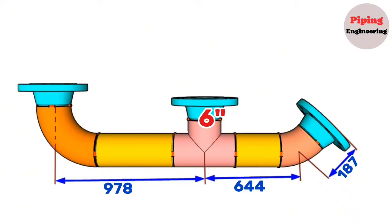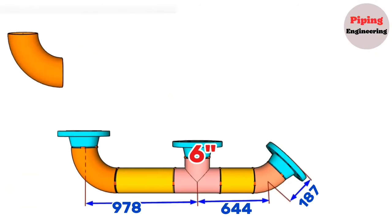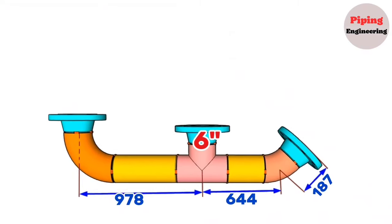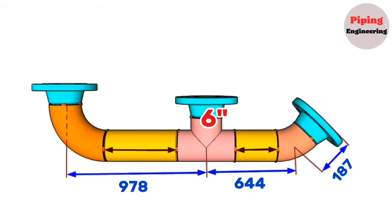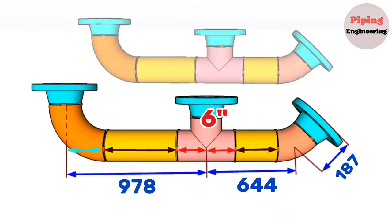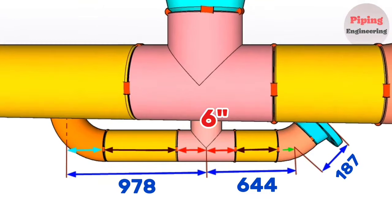In this video, we'll calculate pipe lengths in a 6-inch pipe spool consisting of one 90-degree elbow, one 45-degree elbow, one equal tee, three weld neck flanges, and two pipe sections. From the equal tee dimension chart for 6-inch: outside diameter is 168.3 mm and center-to-end dimension is 143 mm. All pipe fittings are fit up with 3 mm welding gaps.